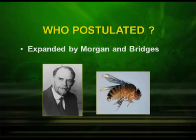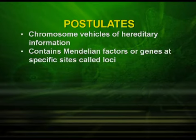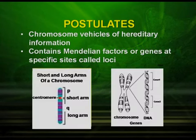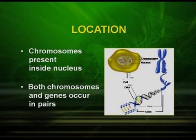Later, it was expanded by Morgan and Bridges. Now, let us see the important points of the Chromosomal Theory of Inheritance. The chromosomes are the vehicles of hereditary information. They contain Mendelian factors or genes at specific sites called loci. When you look into the picture, the specific sites are there on the chromosomes where the genes are located. A very important thing is that both the chromosomes and the genes occur in pairs.